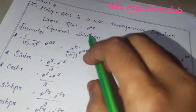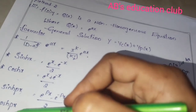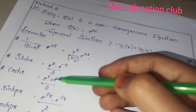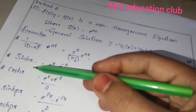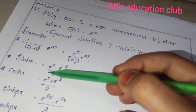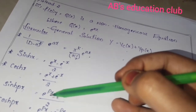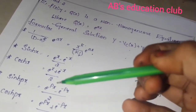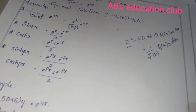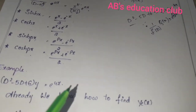For hyperbolic functions: sinh(x) = (e^x − e^(−x))/2, cosh(x) = (e^x + e^(−x))/2, sinh(px) = (e^(px) − e^(−px))/2, cosh(px) = (e^(px) + e^(−px))/2. These are used when Q(x) involves hyperbolic terms — substitute the exponential definitions and apply the e^(ax) formula.